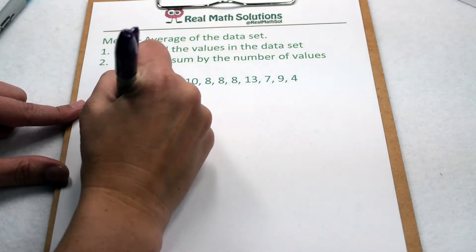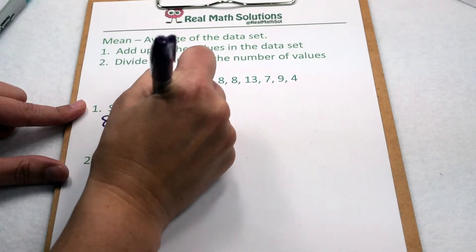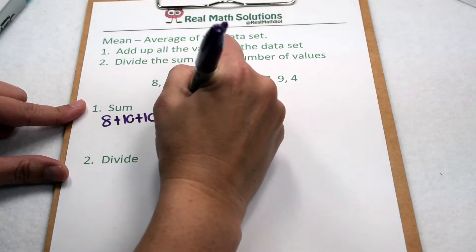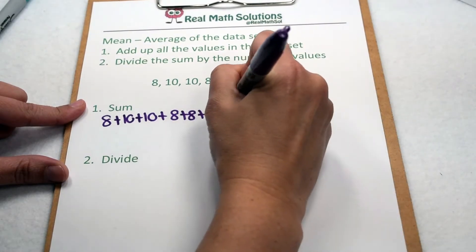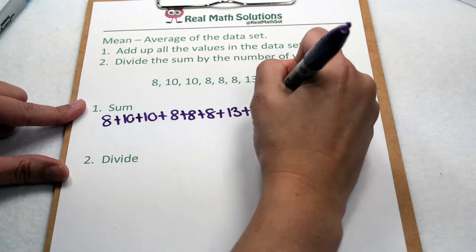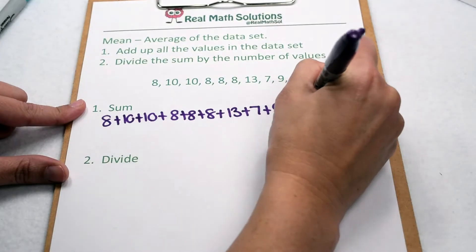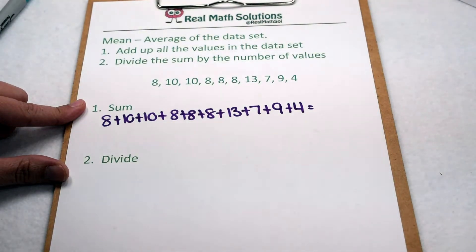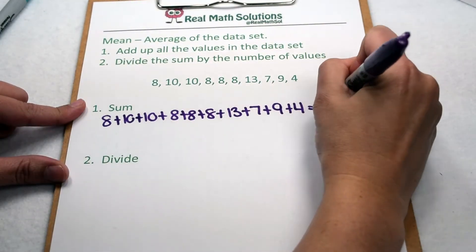So that means we would need to add the 8, plus the 10, plus the 10, plus the 8, plus the 8, plus the 13, plus the 7, plus the 9, and plus the 4. When we add up all those values, we're going to see that they add up to a total of 85.